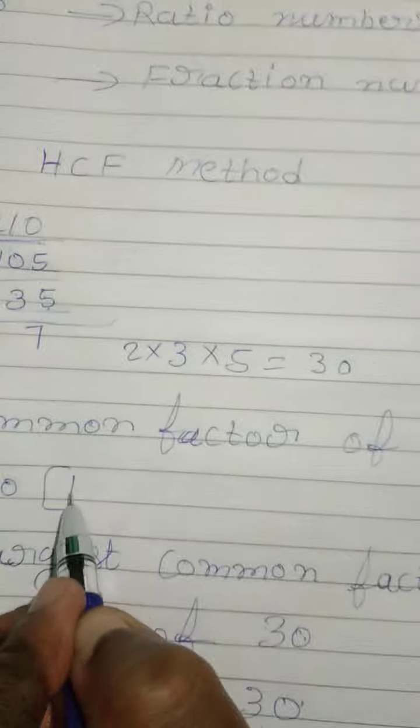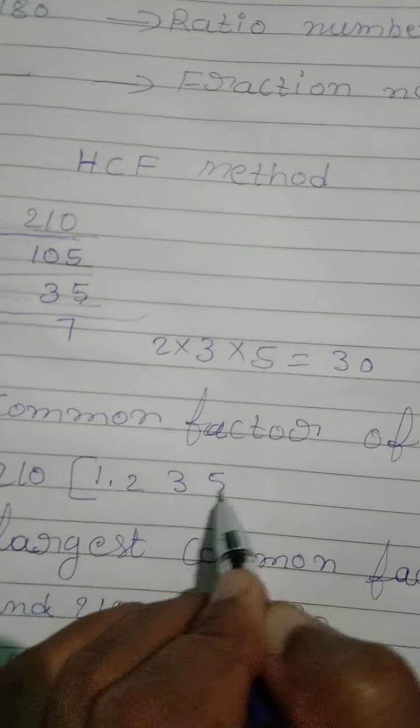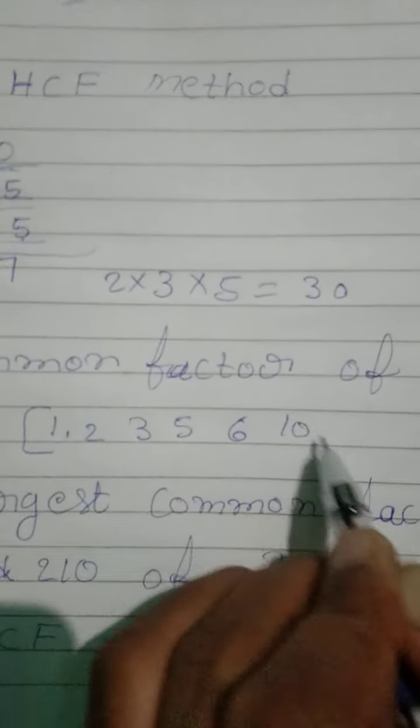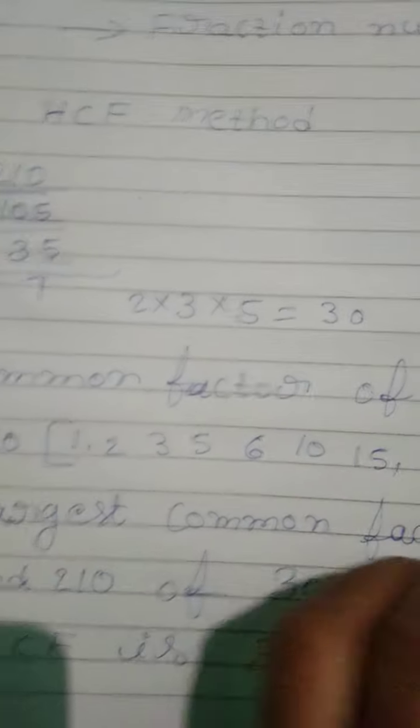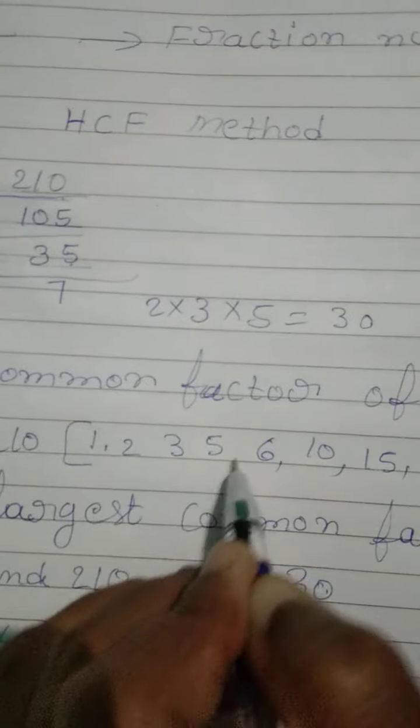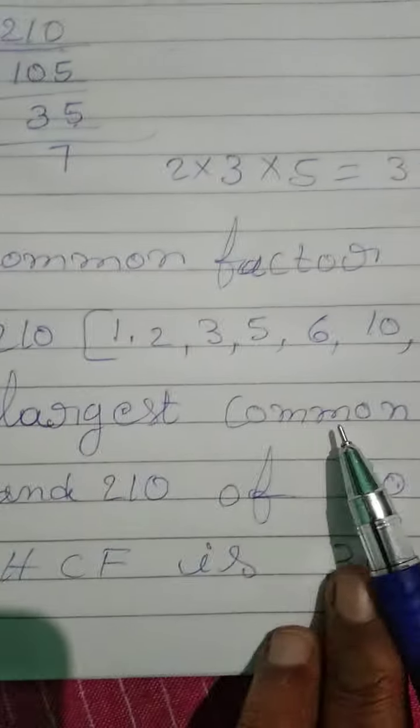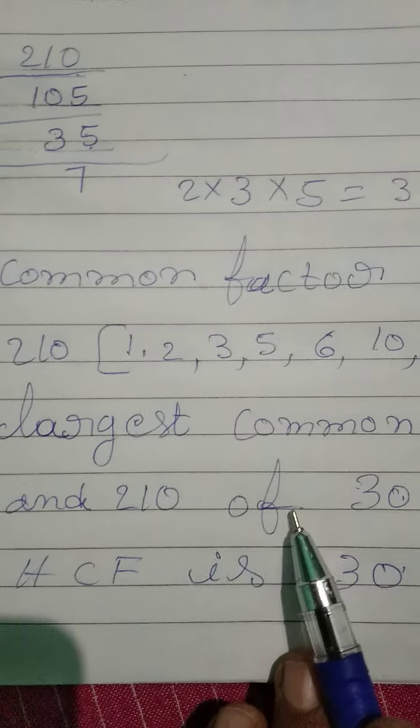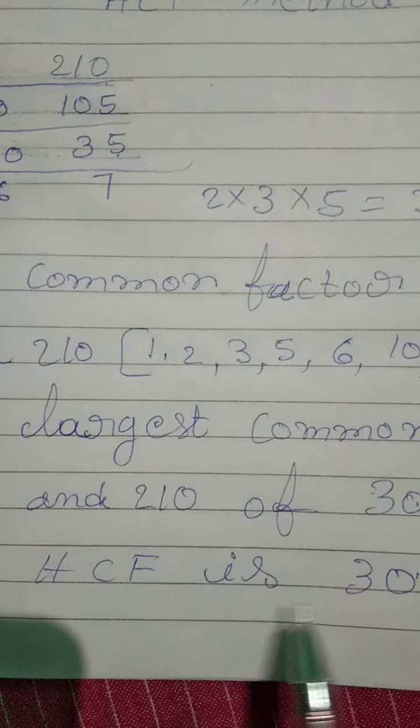The factors are 1, 2, 3, 5, 6, 10, 15, 30. Common factors. The largest common factor of 180 and 210 is 30. So HCF is 30.